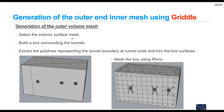Now I want to generate the outer volume mesh. To do this I create a box surrounding the tunnel, which will represent the boundary of my model. Then I extract the polyline representing the tunnel boundary at the tunnel ends and use this polyline to cut the surface of the box. Then I mesh the box using Rhino.